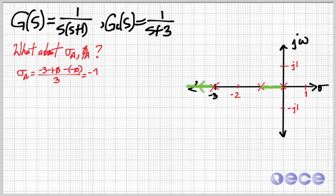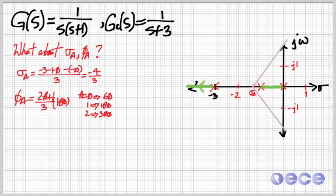So sigma a, because I've added the extra pole, is moved just a little bit to the left. So it used to be at minus one-half. Now it's at about minus one and one-third. So I've noted it here. Most importantly, the angles are different. They used to be plus and minus 90 degrees, but now they're 60, 180, and 300.